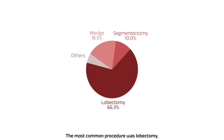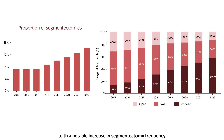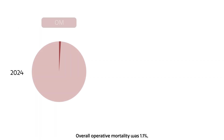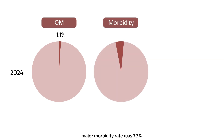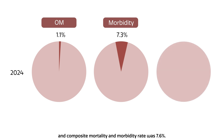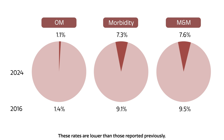The most common procedure was lobectomy, with a notable increase in segmentectomy frequency and a greater representation of robot-assisted surgeries. Overall operative mortality was 1.1%, major morbidity rate was 7.3%, and composite mortality and morbidity rate was 7.6% — rates lower than those reported previously.